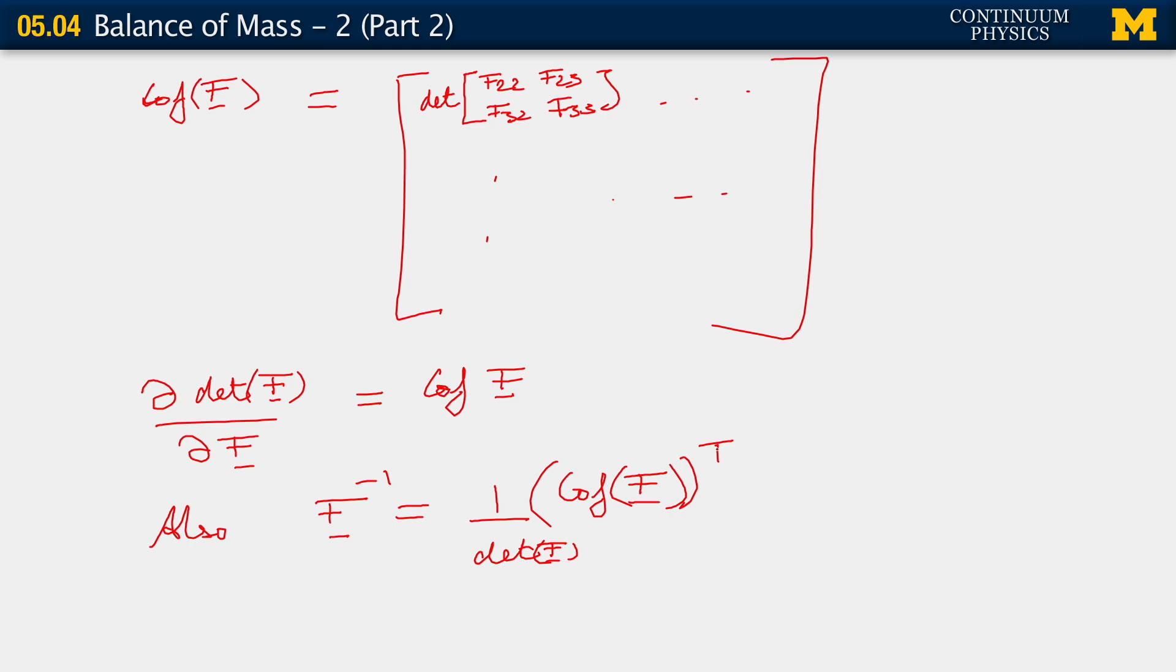That's the closed form formula for f inverse. So, what we see now, using these two results, is that the derivative of the determinant of f with respect to f is the determinant of f itself, a scalar, multiplying f inverse transpose.